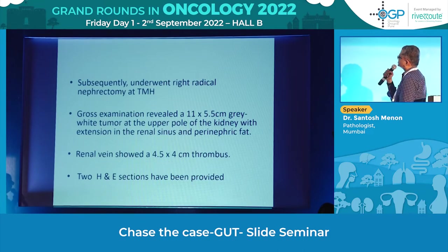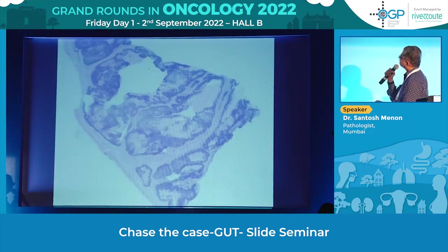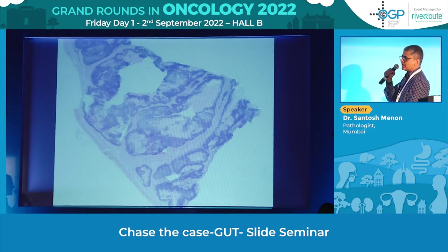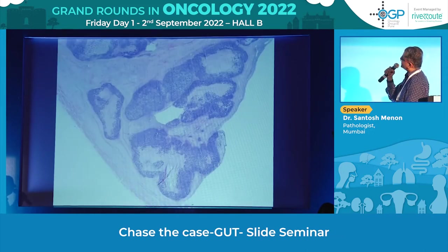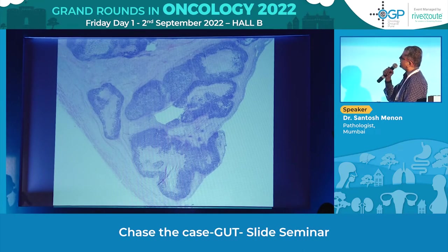They were struggling with what the diagnosis was. Gross examination on resection showed 11 by 5.5 centimetres with a thrombus in the renal vein. The tumour appeared very organoid — a blue and pink mixture with lobular architecture. Blue-looking cellular areas with central necrosis and a lot of hyalinized tissue in a very lobular and organoid fashion.